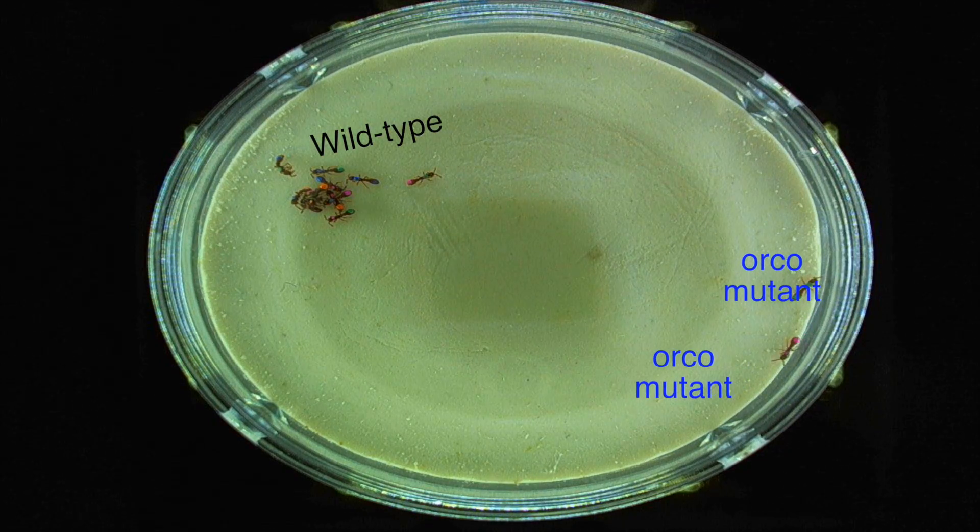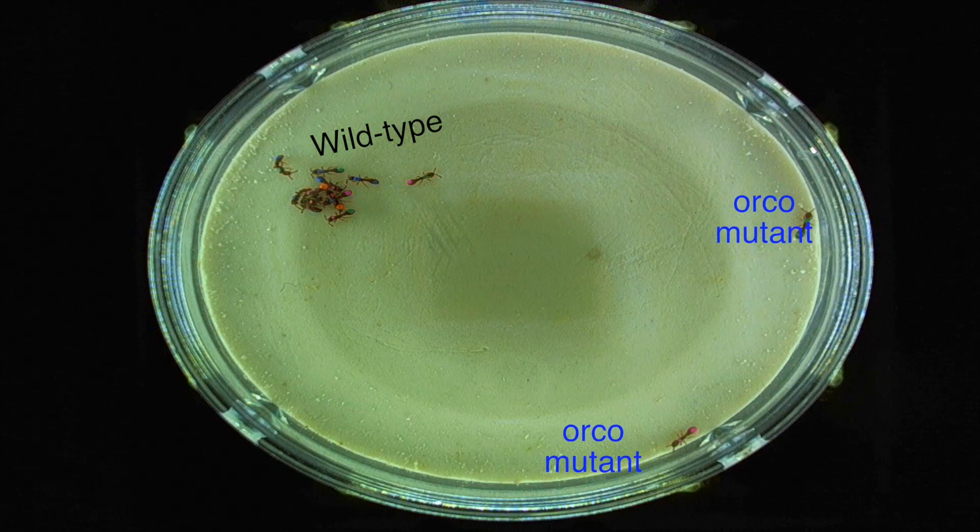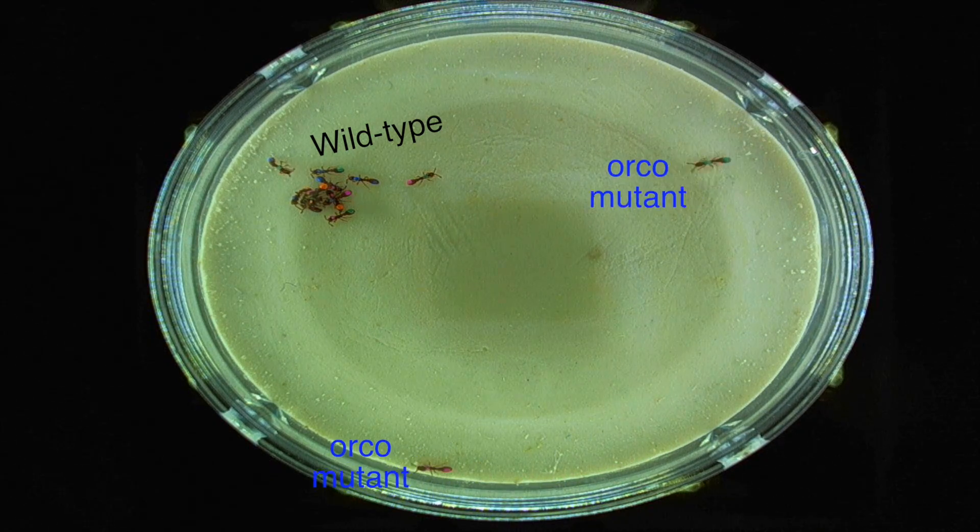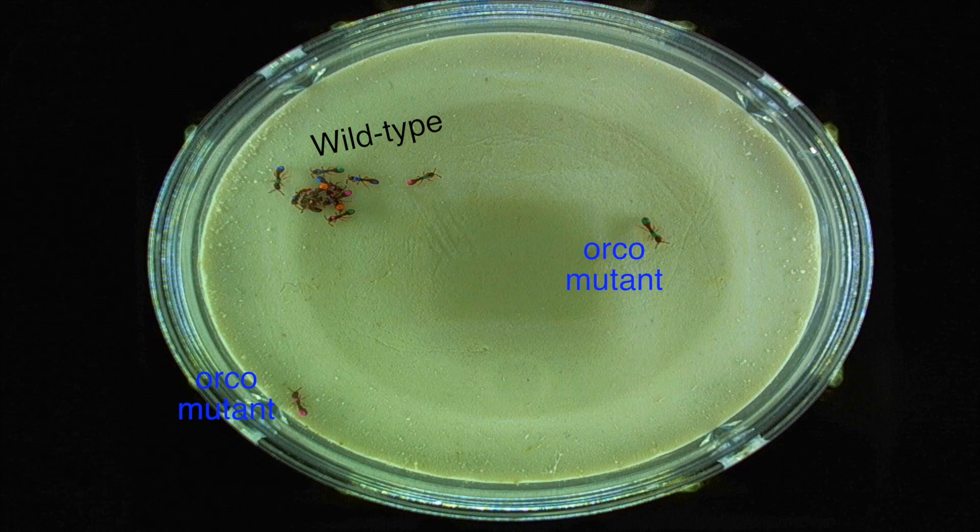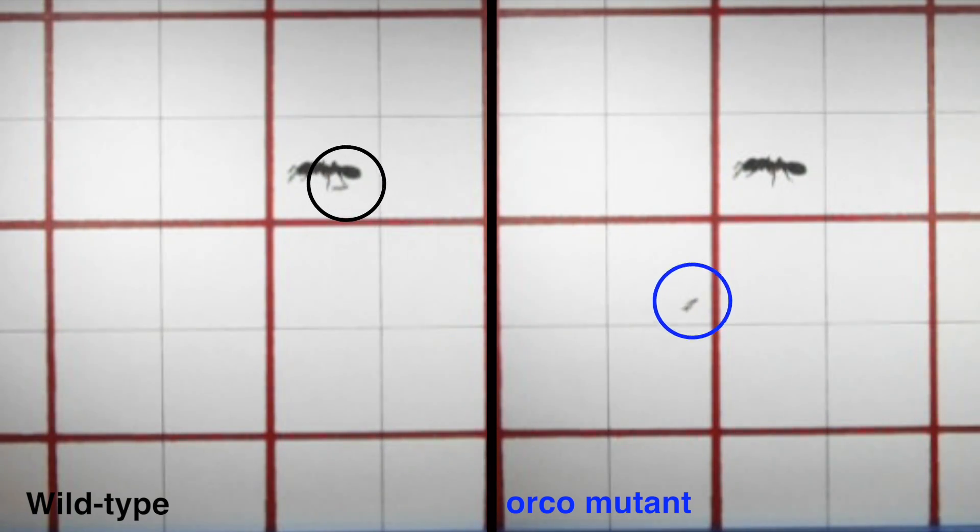Ants with ORCO mutations tended to march to the beat of their own drum. They didn't nest down with the rest of the ants and instead frequently got up to wander around. They also didn't follow the trails laid by other ants, and they didn't seem to mind the smell of sharpie markers, which strongly repels normal ants.